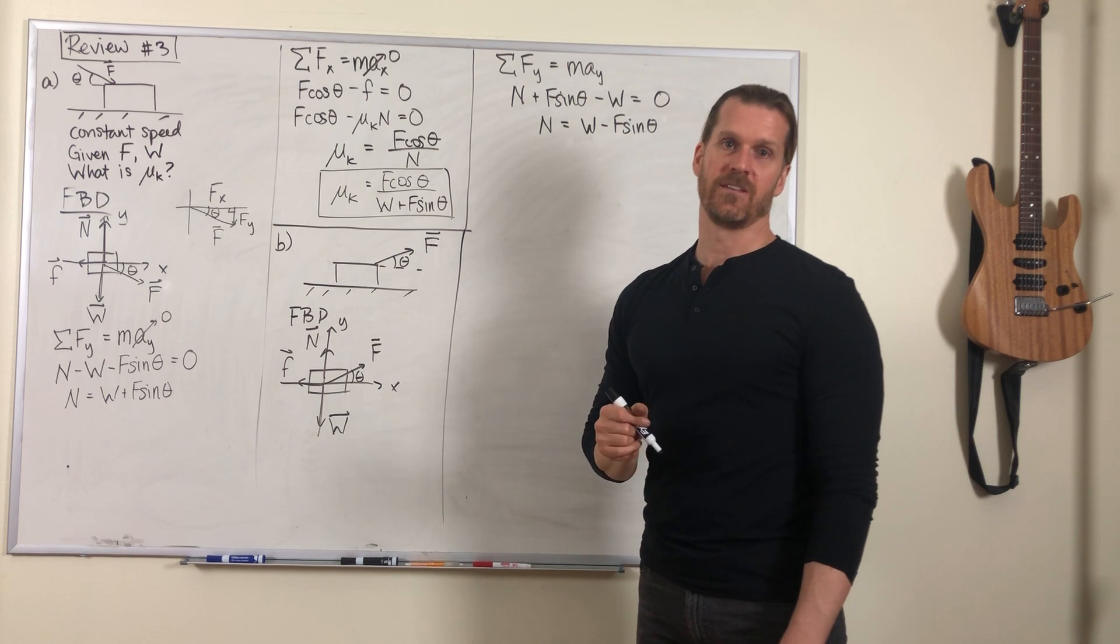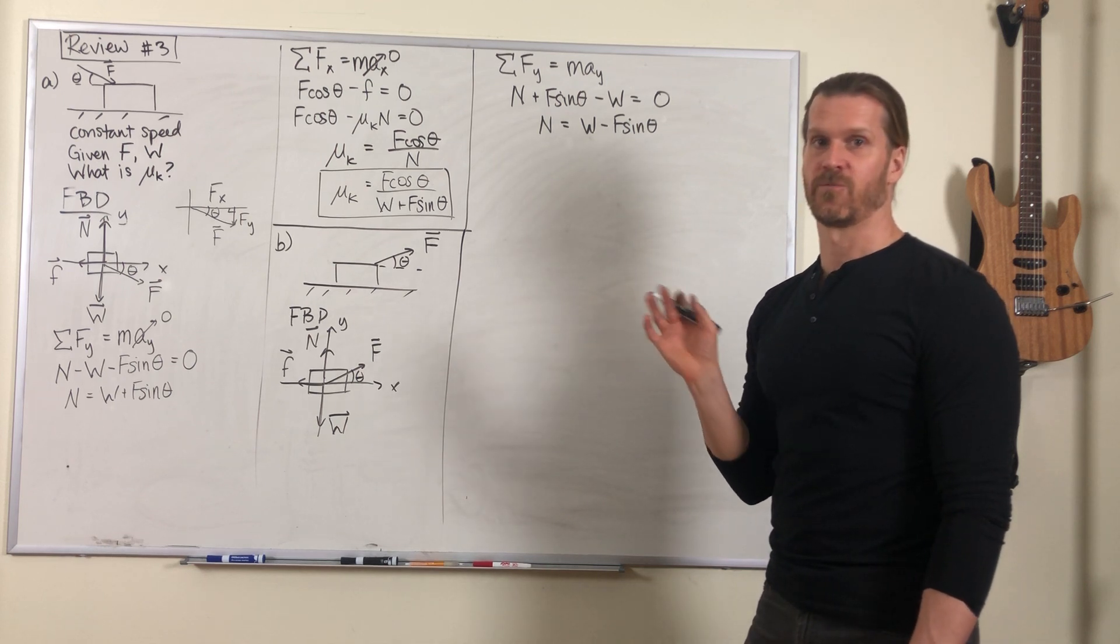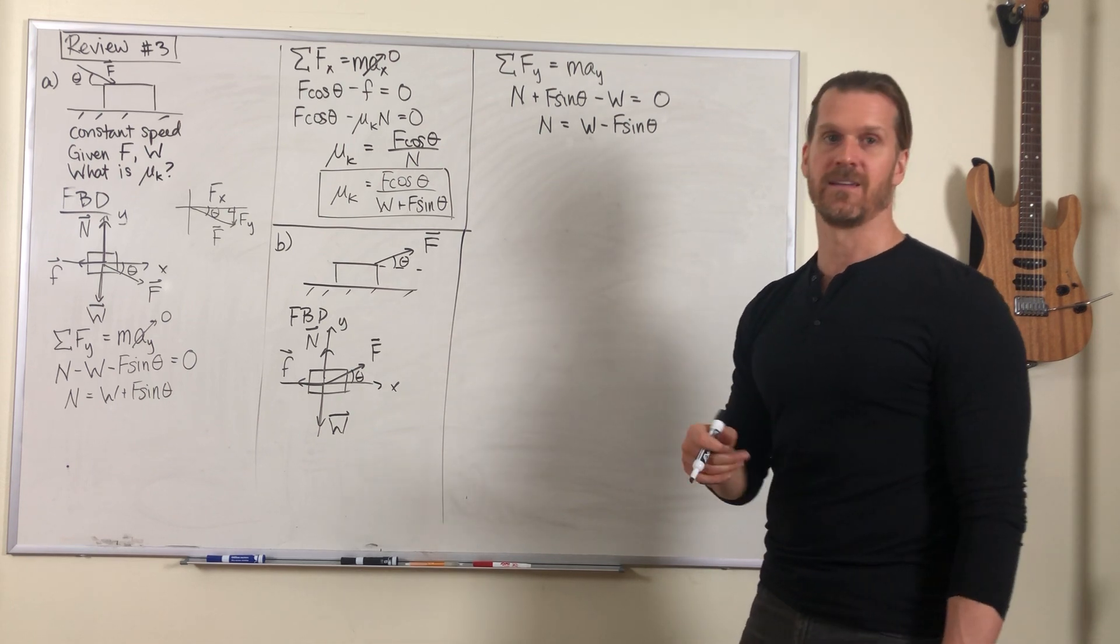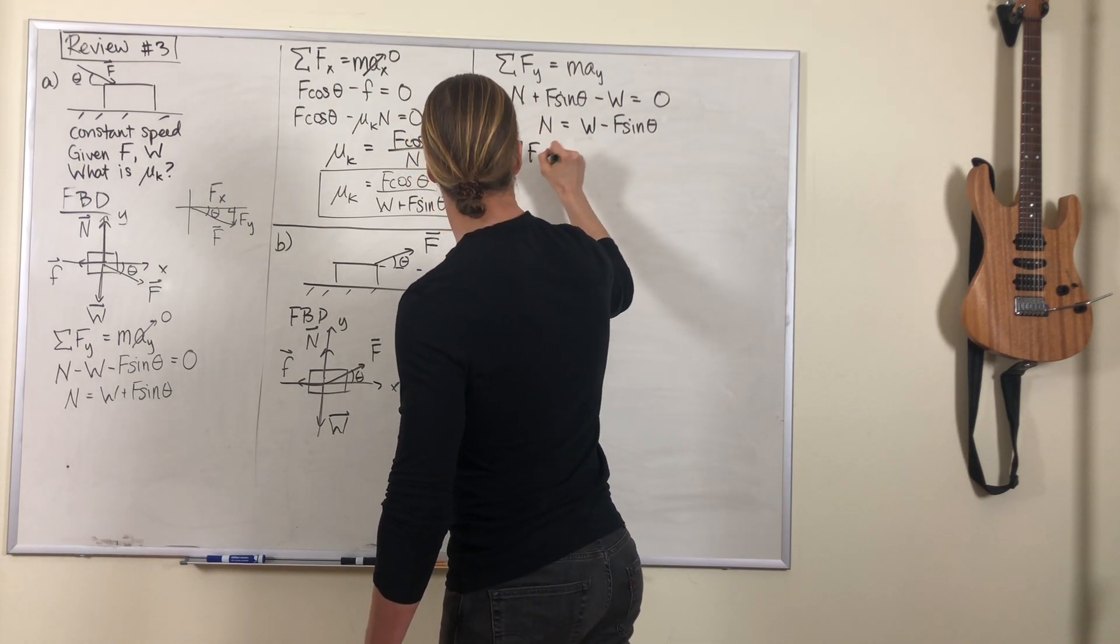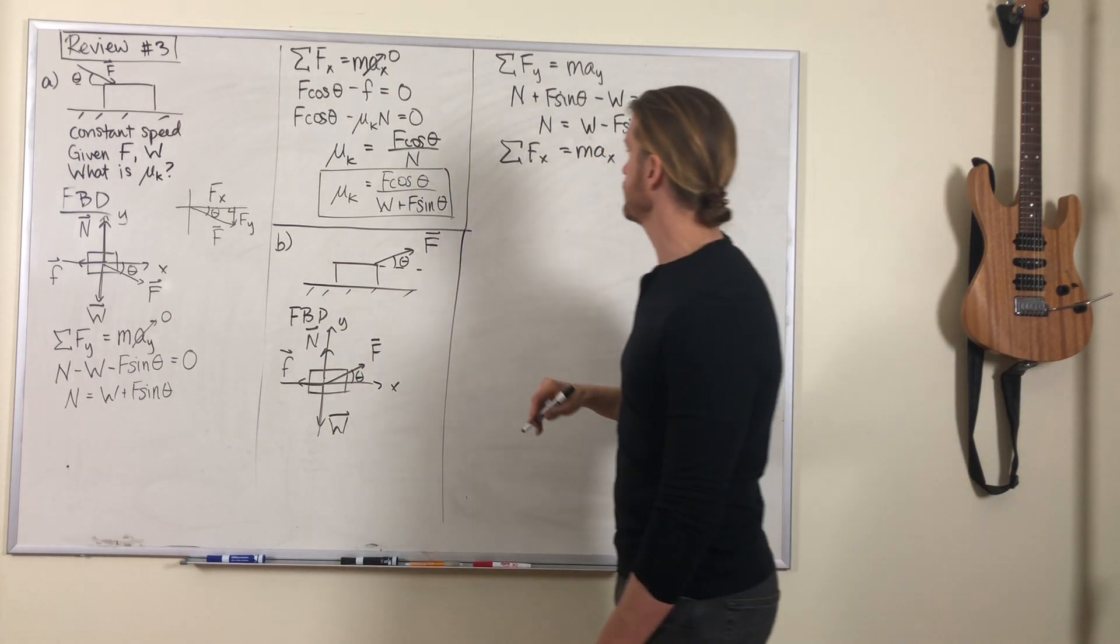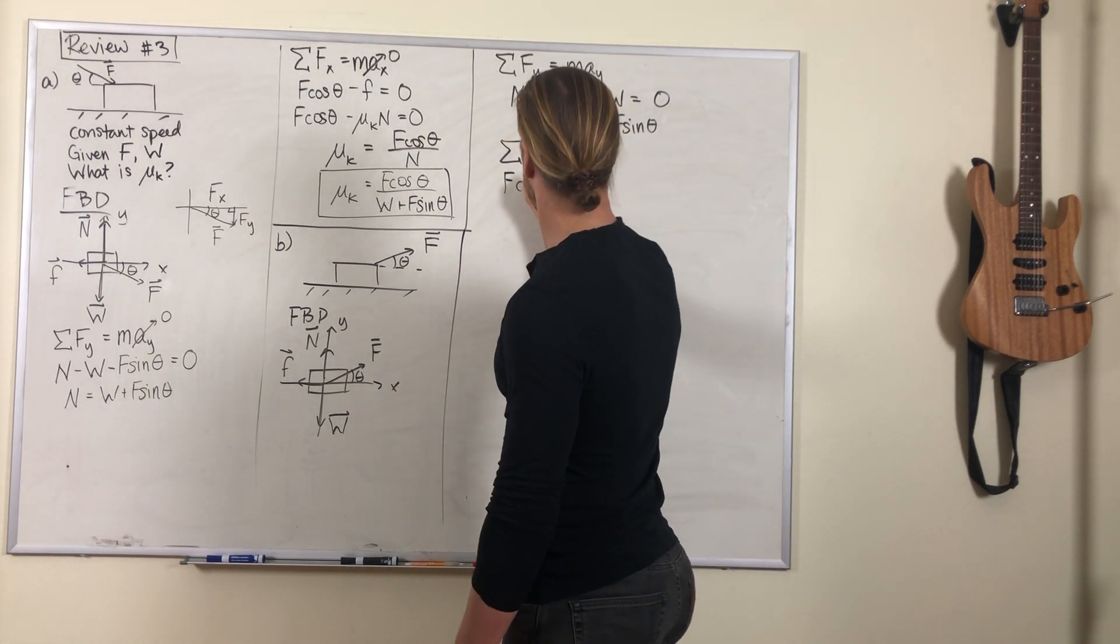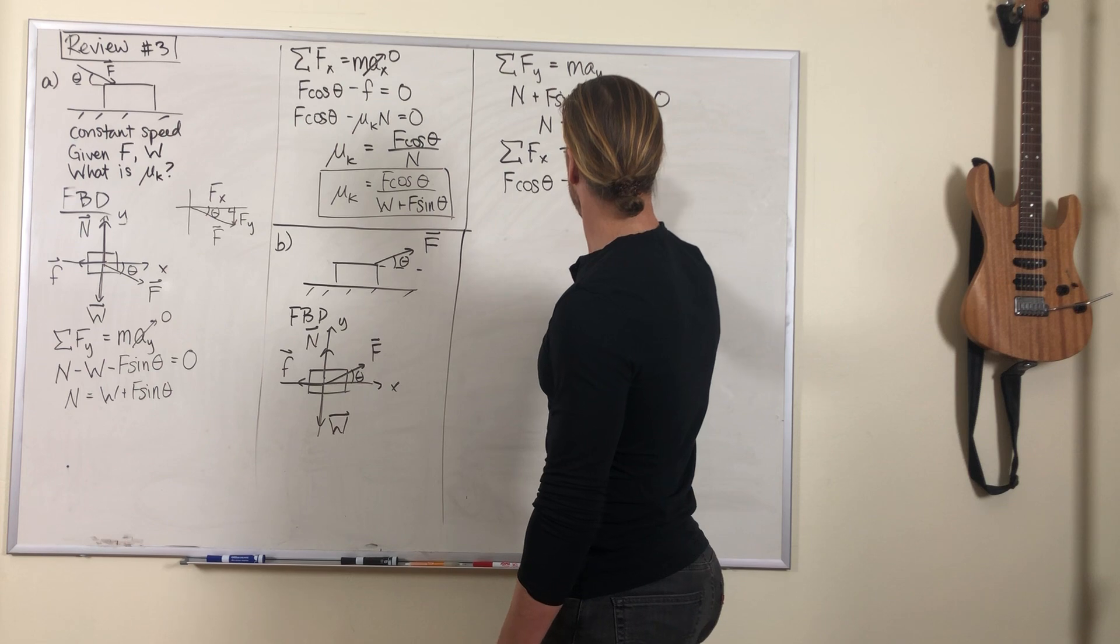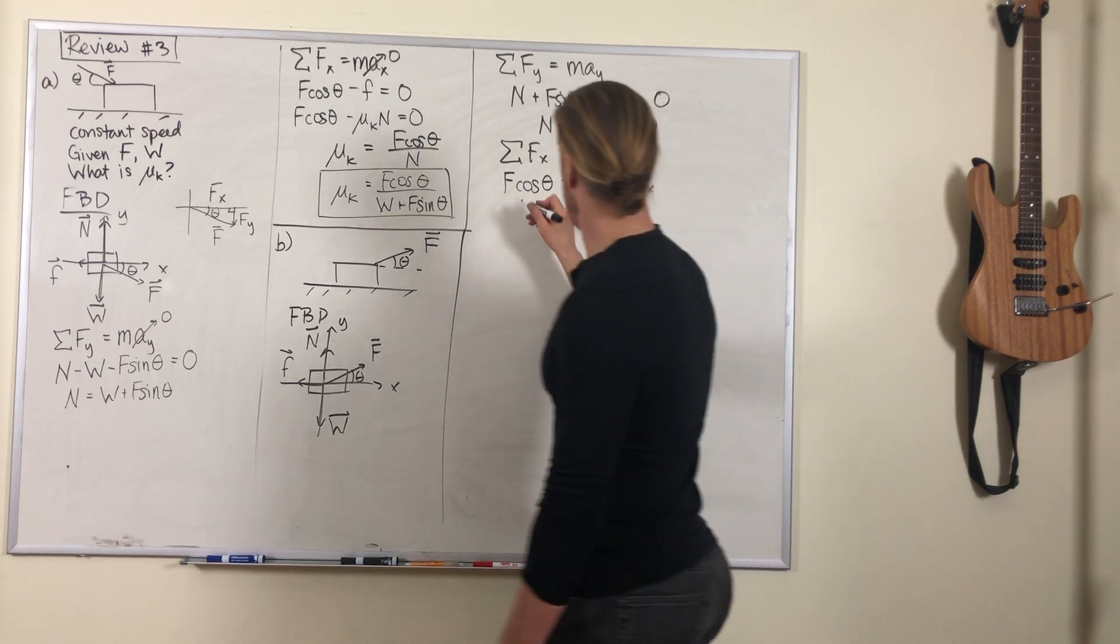Less normal force in part b is going to mean less friction force, which as we'll see results in the fact that now this box is able to accelerate, whereas in part a it had zero acceleration. So let's look at that horizontal direction. We'll no longer assume that ax is zero. We've got that push F cosine theta minus the friction force equals max.